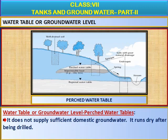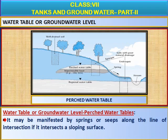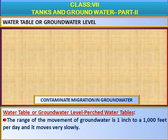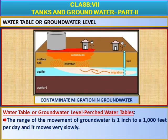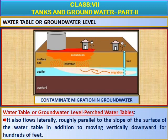It does not supply sufficient domestic groundwater and runs dry after being drilled. It may be manifested by springs or seeps along the line of intersection if it intersects a sloping surface. The range of movement of groundwater is 1 inch to 1,000 feet per day and it moves very slowly. It also flows laterally, roughly parallel to the slope of the water table surface, in addition to moving vertically downward for hundreds of feet.